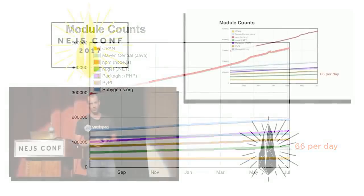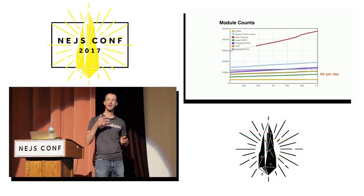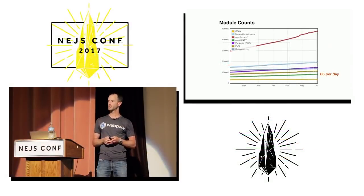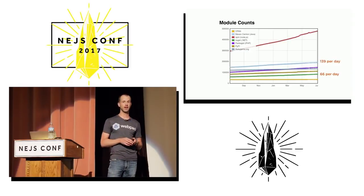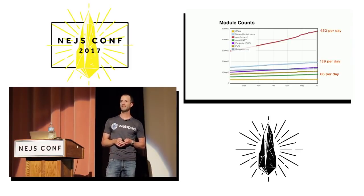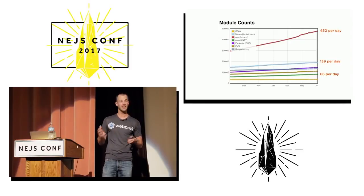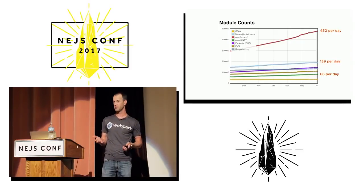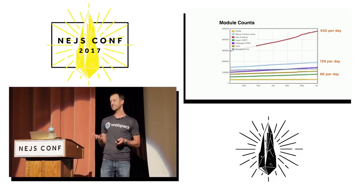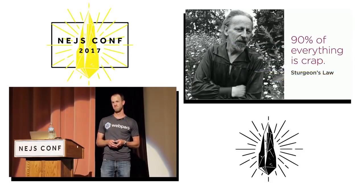NuGet adds 66 packages per day. How about Java? 139 per day. NPM? Almost 500 packages are added every single day. By the end of the day, another 500 things are out there. That is amazing — unless you factor in Sturgeon's Law.